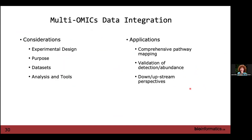Moving from multi-species analysis and protein interaction mapping into multi-omics data integration — for multi-omics, experimental design is a really big consideration. Are you doing RNA-seq with proteomics? Are you doing proteomics with metabolomics? What molecular levels are you working with, and what do you want to get out of your dataset?